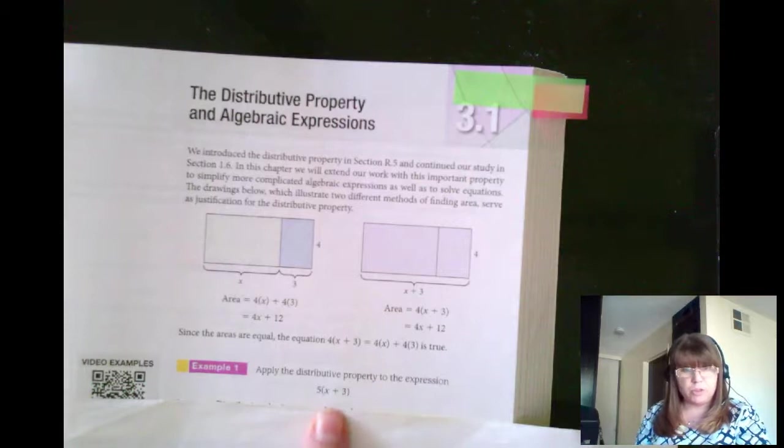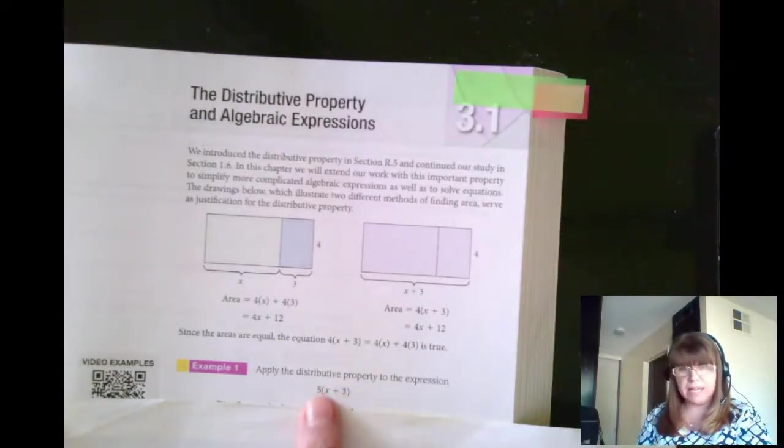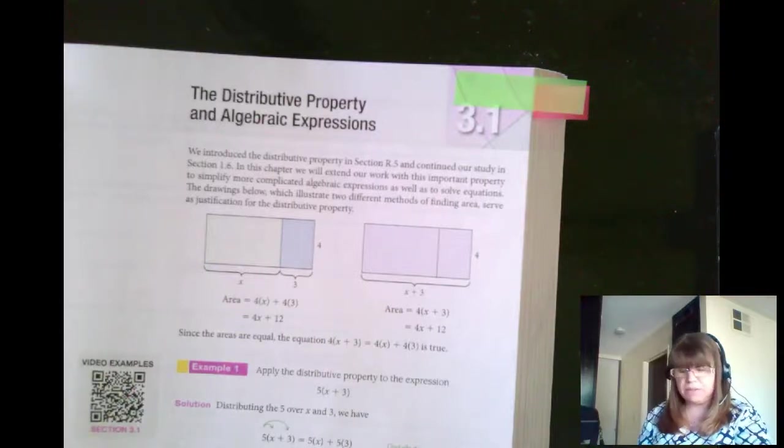Let's apply the distributive property to 5 times the quantity x plus 3. I'm going to distribute the 5 to the x as well as to the 3. So 5 times x, 5x. 5 times 3, 15. So my answer, 5x plus 15.